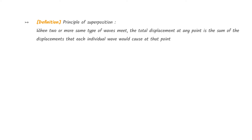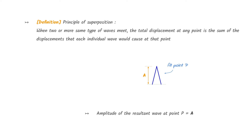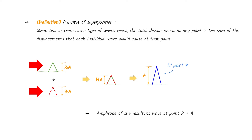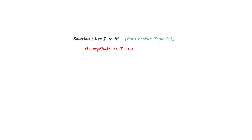The principle of superposition states that when two or more waves of the same type meet, the total displacement at any point is the sum of the displacements that each individual wave would cause at that point. Let's say that the amplitude of the resultant wave at point P is A. The only way this is possible is when two waves each with amplitude of half A undergo constructive interference at point P. In conclusion, the sources have half the amplitude of that at point P. Intensity is directly proportional to the amplitude squared. If the amplitude halves, the intensity will decrease by a quarter.